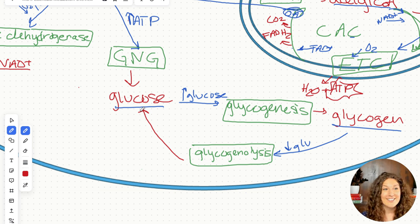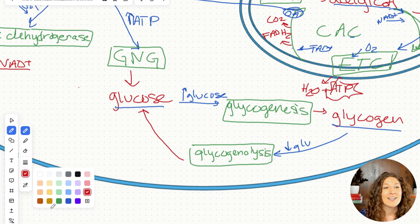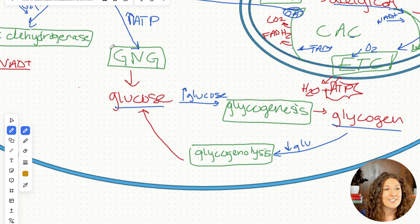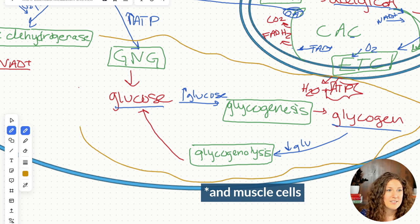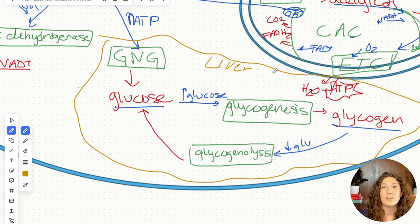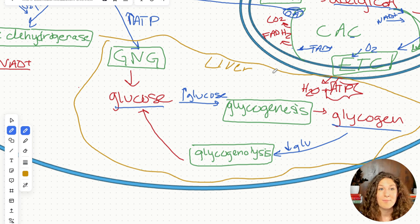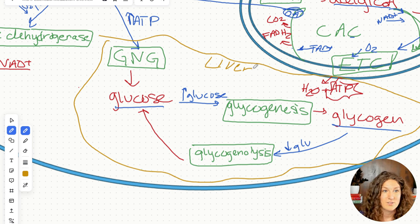An important thing to know: this whole system — gluconeogenesis, glycogenesis, and glycogenolysis — all happens in liver cells specifically. This is specific to liver cells, and then liver cells can release that glucose to be sent out to other parts of the body. Glycogen storage and gluconeogenesis — formation of new glucose — both happen in liver cells, not just all cells.